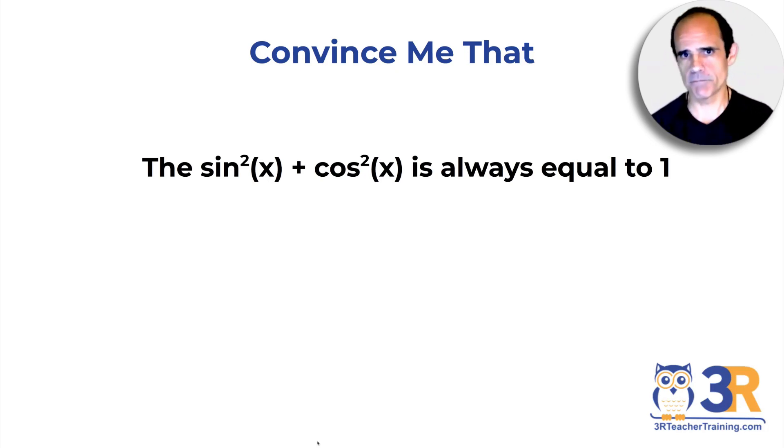This one - I don't know if there's any secondary math teachers out there - but as a tip, I would tell them to use the unit circle maybe to show me their design square, because the sin²(x) + cos²(x) is always equal to one. And then hopefully they'll get to the Pythagorean theorem at some point. So there are tons of convince me that problems out there and they're great for Flipgrids.